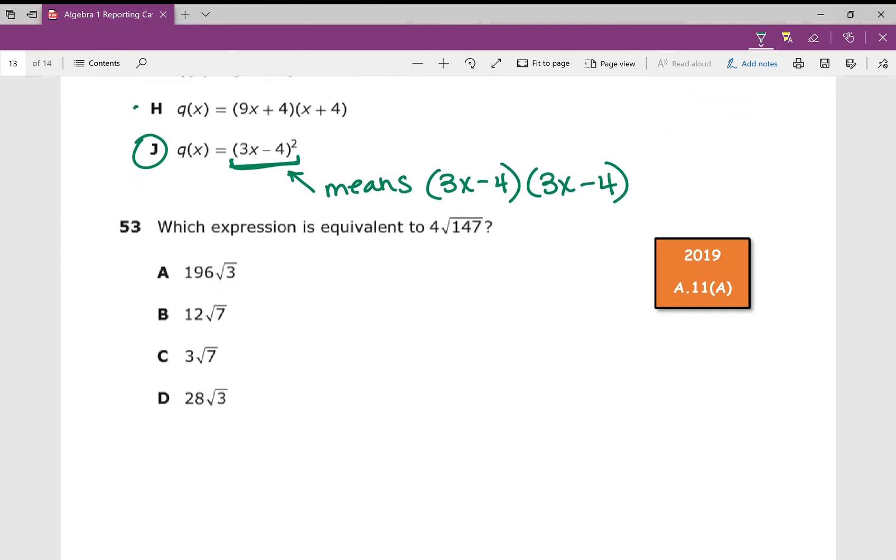Number 53, which expression is equivalent to? You can always just plug in 4 times the square root of 147, and you get about 48.497. Which one of these gives you the same thing? Answer choice A gives you 339.48, so that's absolutely not it. B gives you 31.749, absolutely not it. C gives you 7.937, absolutely not it, because it's not even the same. 28√3 gives you 48.497. Therefore, that's my answer.